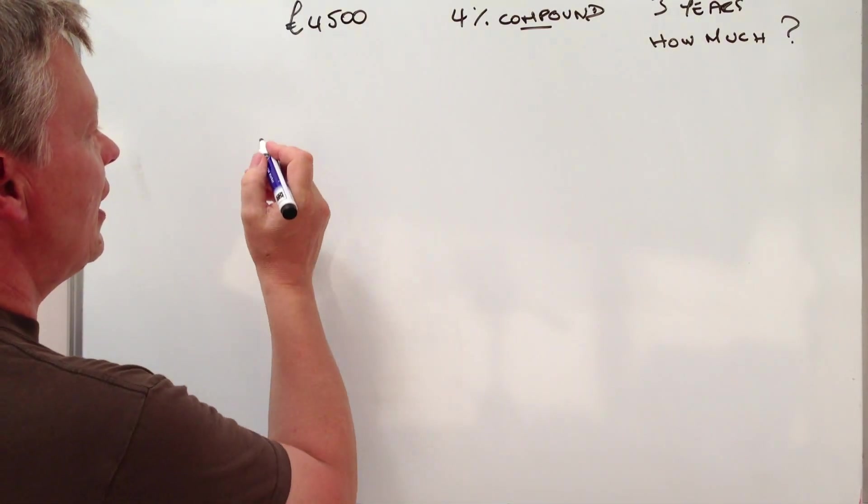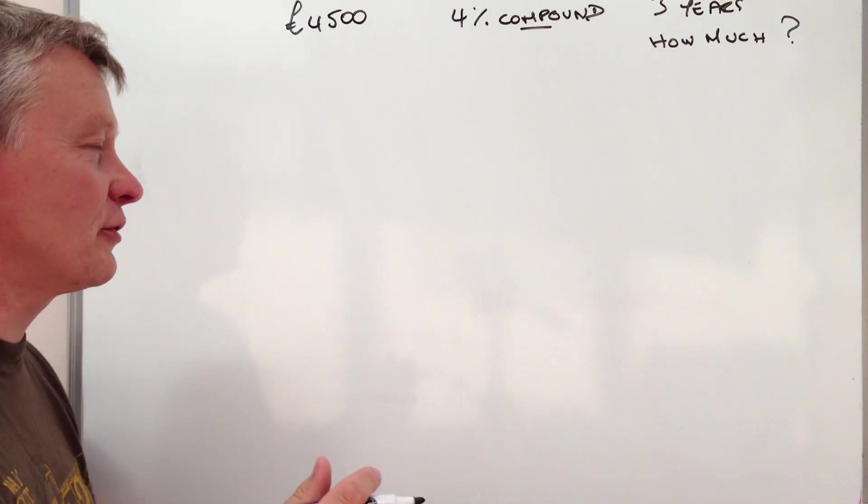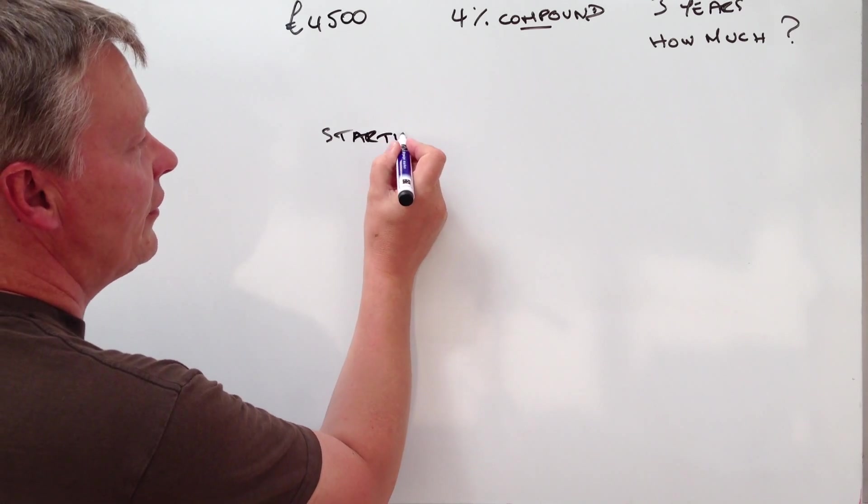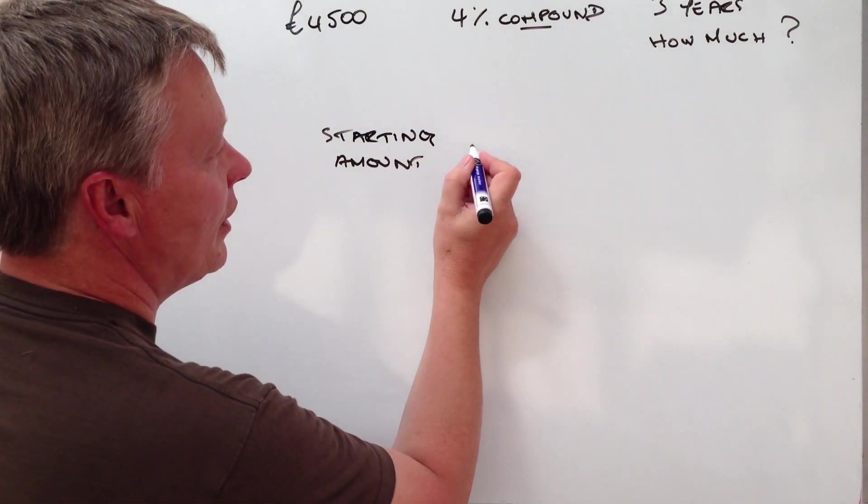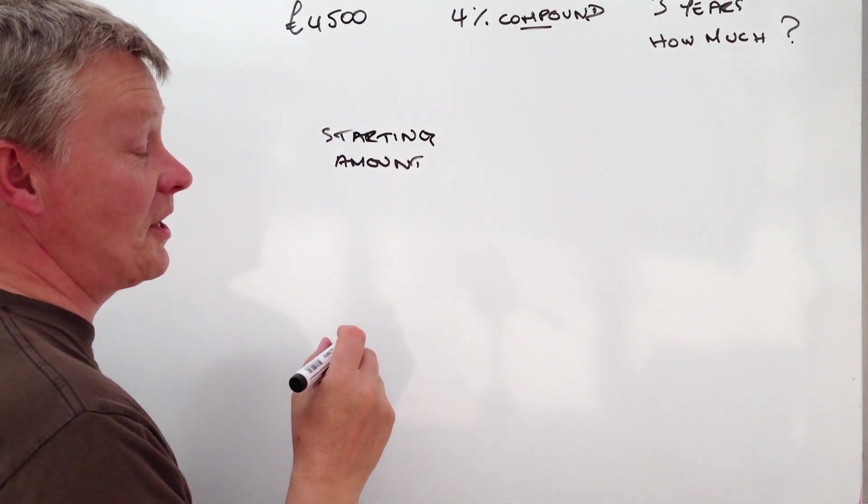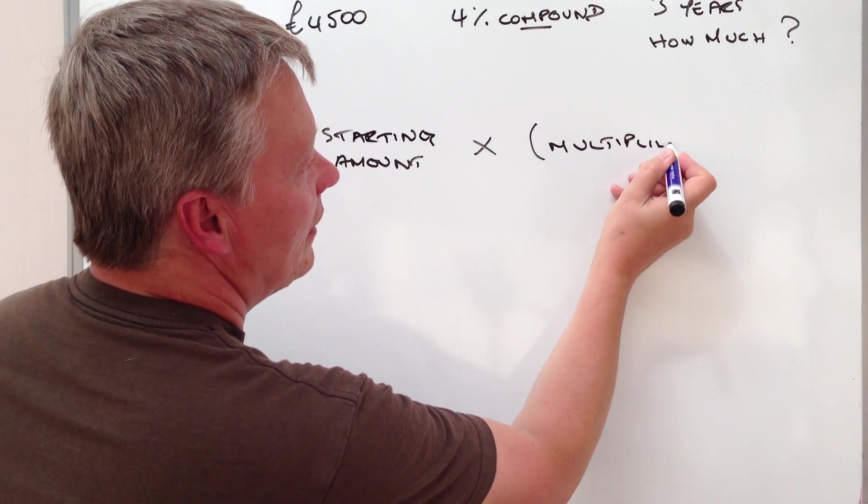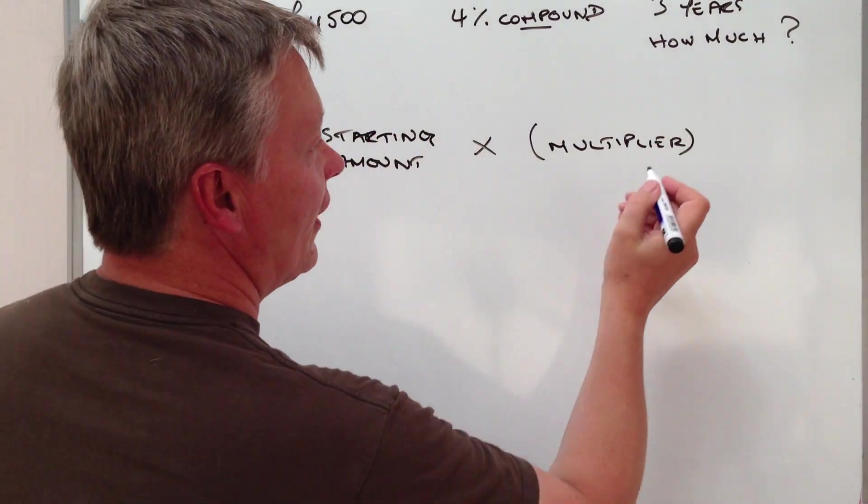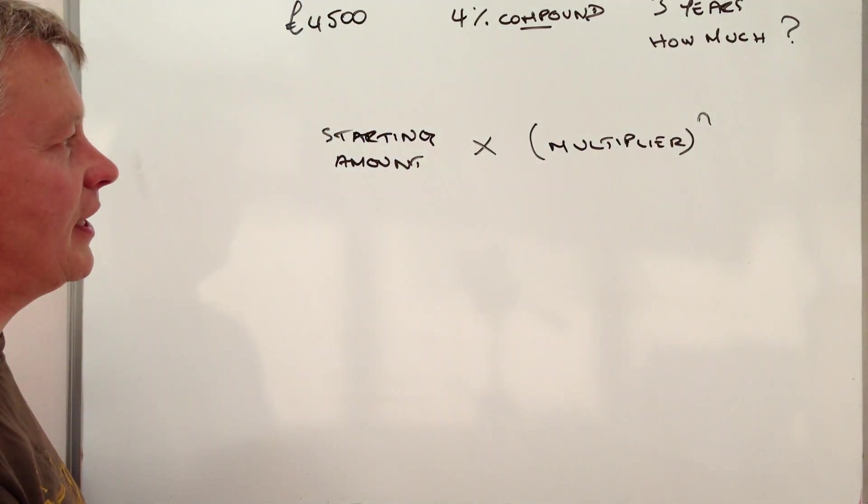Now the formula I tend to use, I'm going to try to put this into terms that are relatively straightforward. So I'm going to put starting amount, which is going to be, in this particular case, the £4,500, and that's going to be multiplied by the multiplier, which is, in this particular case, the 4% compound, and that's to the value of n, which is the number of years, which in this particular case is 3 years.